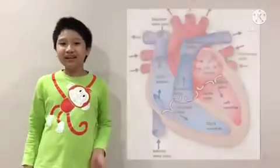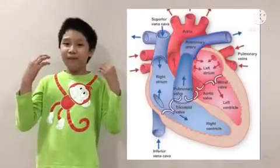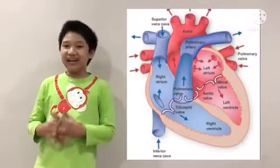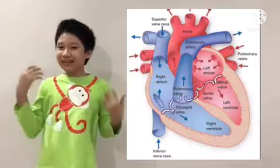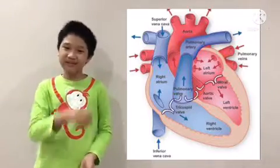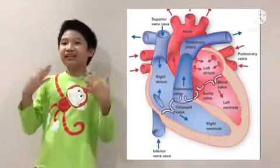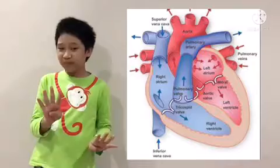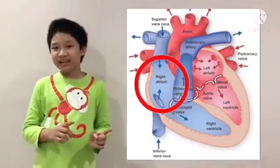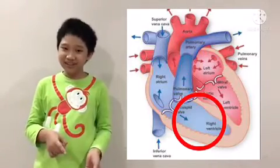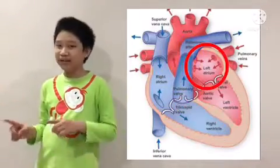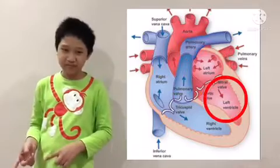The heart is a big organ, mainly about the size of your fist. The heart consists of four chambers: the right atrium, the right ventricle, the left atrium, and the left ventricle.